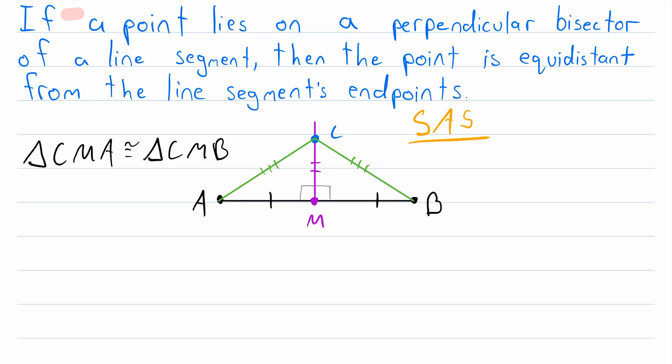Another interesting thing to note is that the converse of the perpendicular bisector theorem is also true. The converse states that if a point is equidistant from a line segment's endpoints, then that point lies on a perpendicular bisector of the line segment.